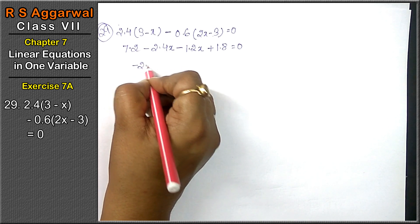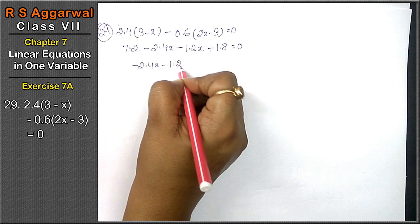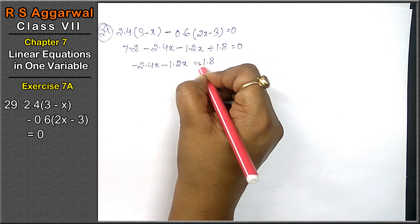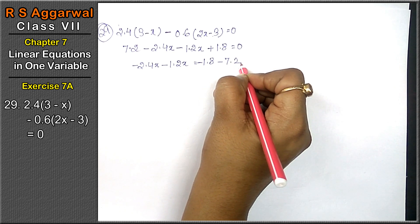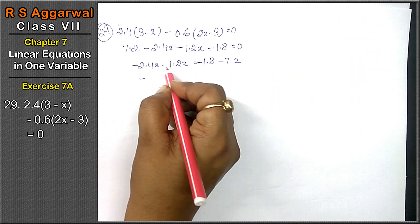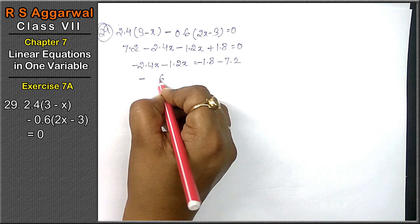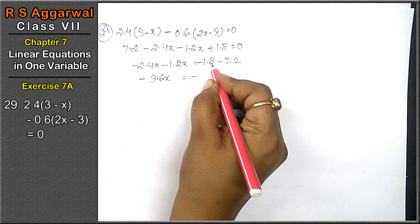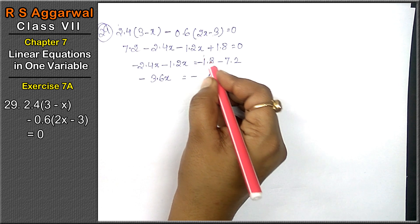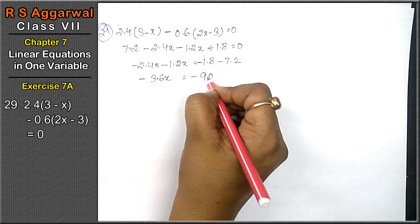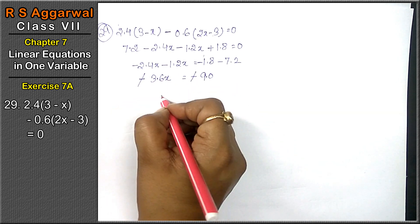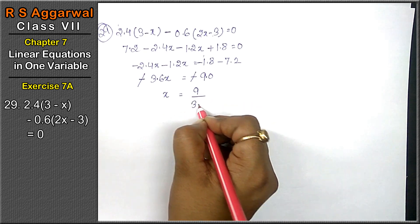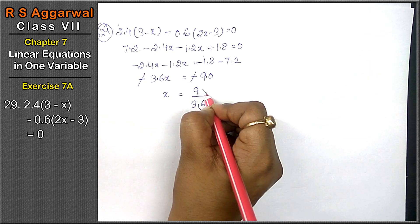Now x terms on this side, that means minus 2.4x and minus 1.2x equals to non-x terms on the other side, 1.8 minus 7.2. Now minus 4 plus 2 is 6, 2 plus 1 is 3 point. X equals to minus 8 plus 2 is 10, 1 carry, 7 plus 2 is 9 point.